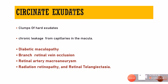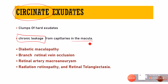First, let us discuss the circinate pattern — ring-shaped exudates. Circinate exudates indicate chronic leakage from the capillaries and are usually present in and around the macula. Conditions where we see this include diabetic maculopathy, branch retinal vein occlusion (BRVO), retinal artery macroaneurysm, radiation retinopathy, and retinal telangiectasia. The first three are more common.